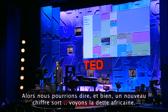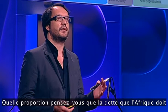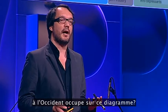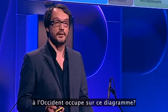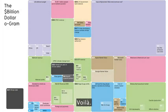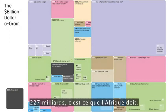So we can say, well, a new figure comes out — African debt. How much of this diagram do you think might be taken up by the debt that Africa owes to the West? So there it is, 227 billion is what Africa owes.